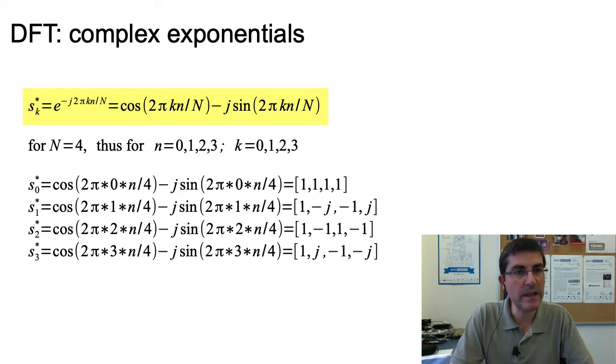we can express it as a complex exponential, e^(-j2πkn/N), and this is equal to the cosine of the same value, minus j sine of this same frequency. So, the real and imaginary part of this complex exponential.